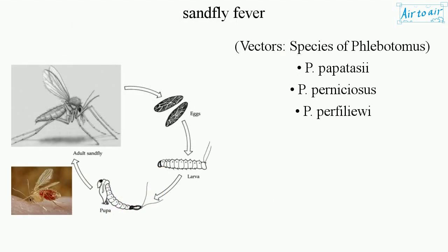Vectors: Species of Phlebotomus — P. Papadicea, P. Pernisiosis, P. Perfiliae.